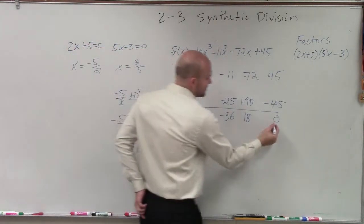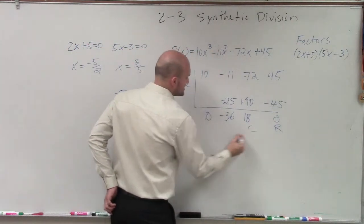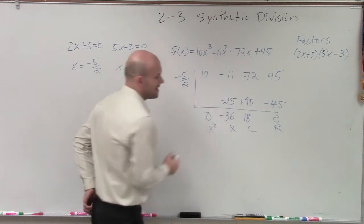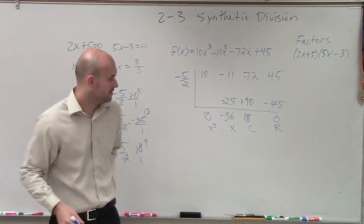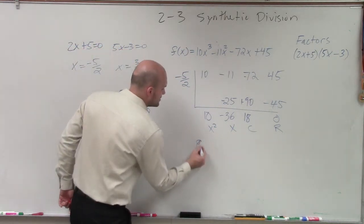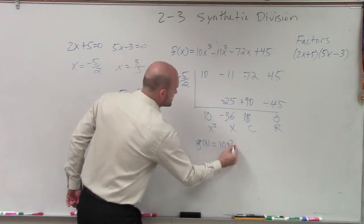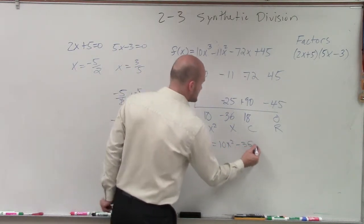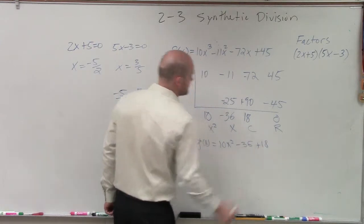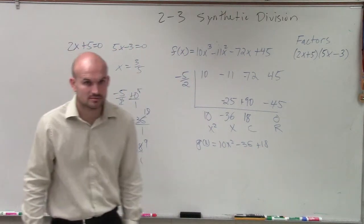So now I know I did it correctly because I have a remainder of zero: constant, linear, quadratic. So I could say my quotient, q of x, is equal to 10x squared minus 36x plus 18.